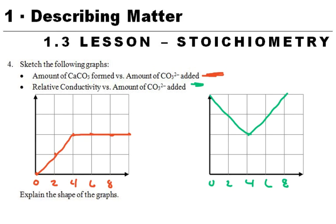I'm going to go over a little bit about the 1.3 lesson. We did get to look at the various boxes in the beginning and kind of follow what would happen if we had some calcium chloride and we were adding some sodium carbonate. If we were looking at the amount of calcium carbonate formed as we added the sodium carbonate, we would see that the amount of calcium carbonate increased and increased, and then at some point it's not going to increase anymore because we've used up all of the calcium ions, so it is just going to have a plateau.